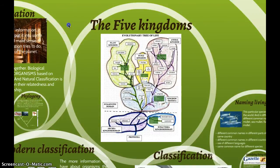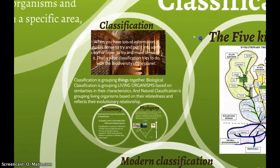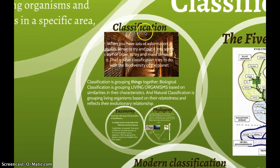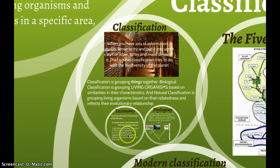To summarize: classification is the process, taxonomy is how we carry out that process, and phylogeny is what information we can gain from that process. Next we'll look at what it looks like if you did manage to classify all the living organisms we have found so far.